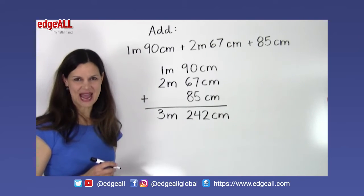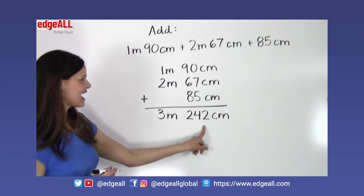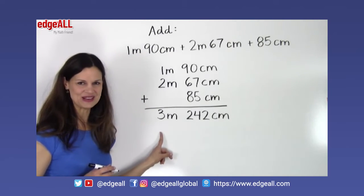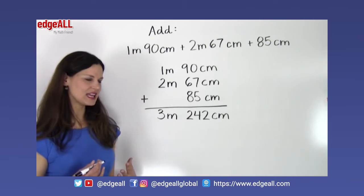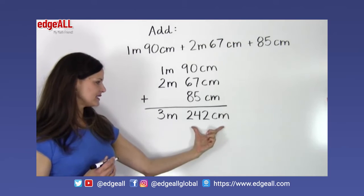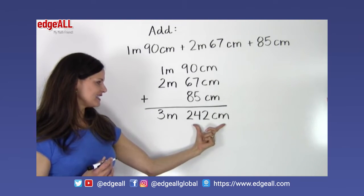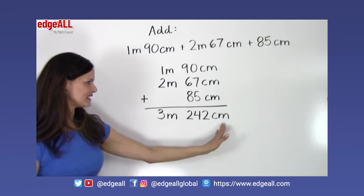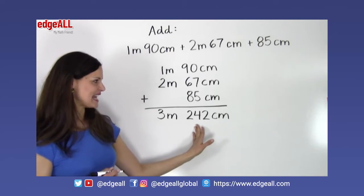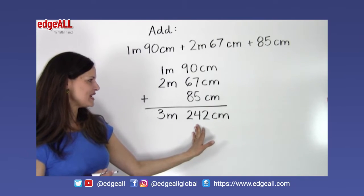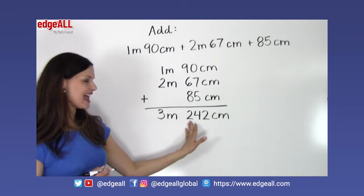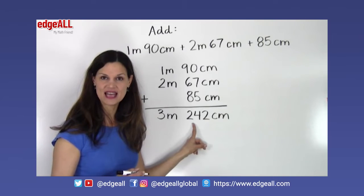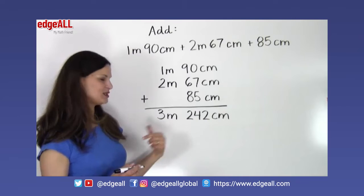My second step is going to be to look at the results of step 1 and see if any unit can be simplified to a bigger unit. So in this step we're specifically looking at our smaller units and seeing if any of these can be converted to our larger unit. And in this case, when I look at the 242 centimeters, I know that 100 centimeters equals 1 meter. So when I see in here that I have 242 centimeters, I can see that 200 of those centimeters can be converted over to meters.